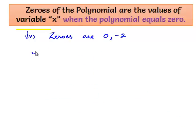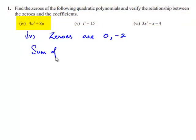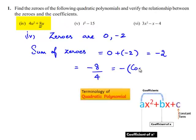Now the sum of the zeros is 0 + (-2) = -2. This is written as -8/4, which is the coefficient of u.